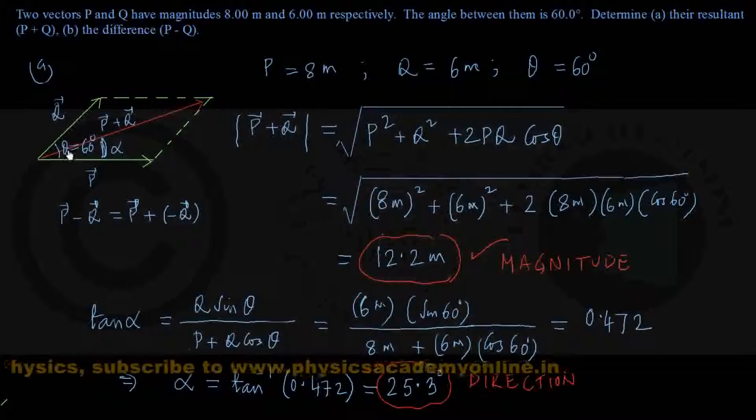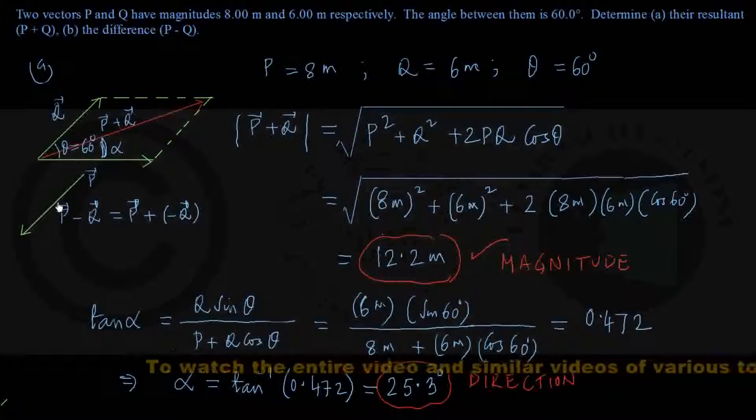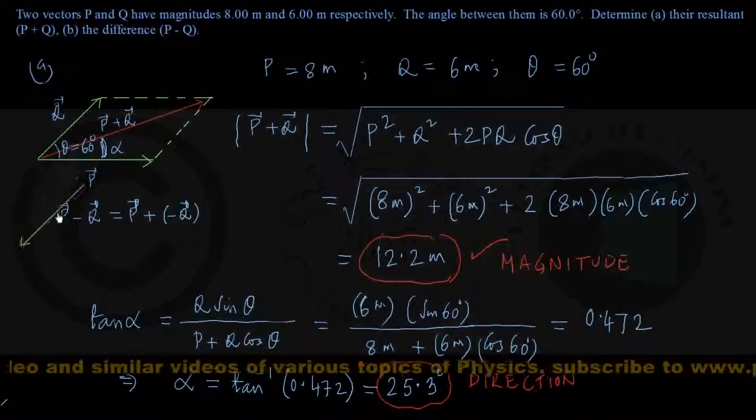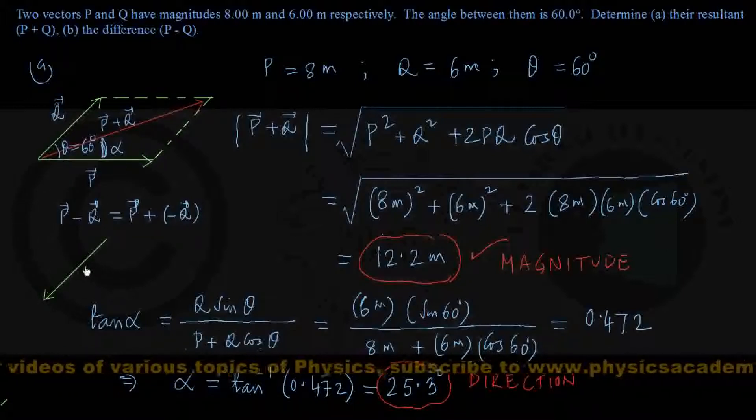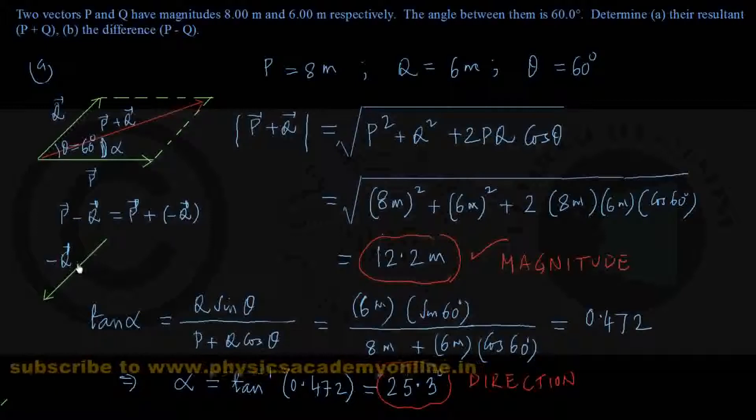In this figure, P remains as it is, but if this was vector Q, then negative Q must be in the opposite direction with the same magnitude. For subtraction, I add P and negative Q. The parallelogram law construction makes P and negative Q adjacent sides, unlike the first part. We'll do this separately in a fresh page.